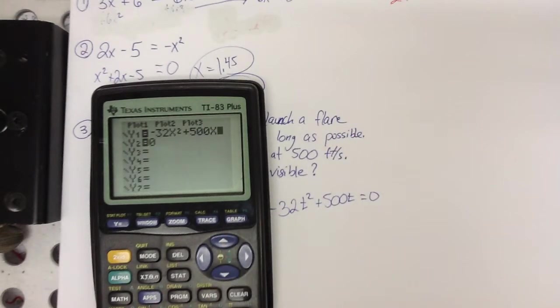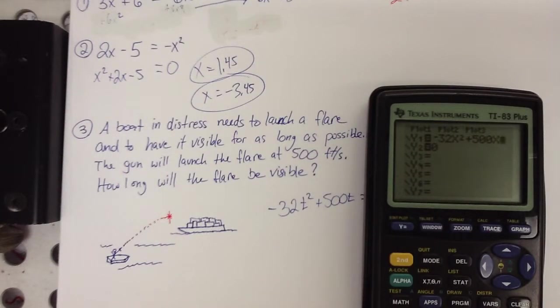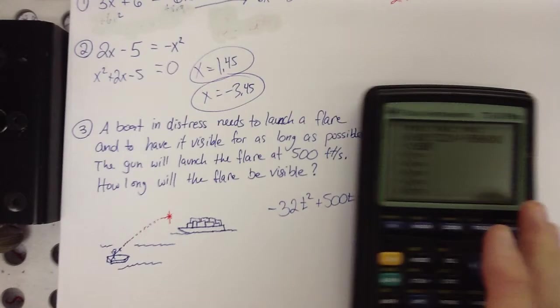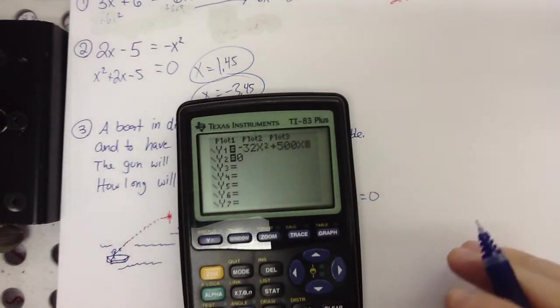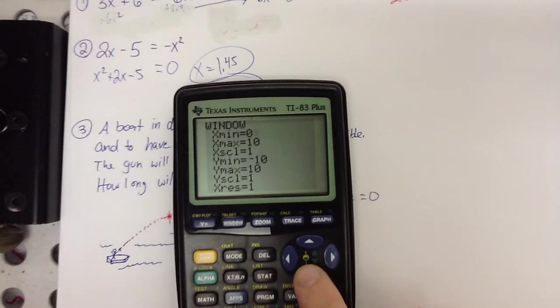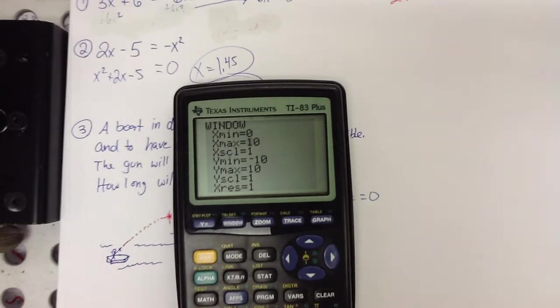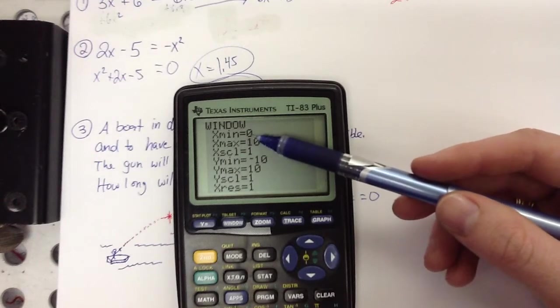Alright. Now, before I hit graph, remember what's going on. We are shooting a flare in the air off a boat, 500 feet per second. So I'm assuming in the first second it's probably going to travel a long ways. Since my normal window only goes up to 10, we may as well open the window and do some changes now. Your minimum, x is time in this case. We're not going backwards in time, so let's just start at zero. The maximum, I don't know. This thing may be in the air for a while. So let's start with 10 seconds and if we go off the screen, we'll try a larger time. Again, x is time, so this is kind of where you start and where you end.